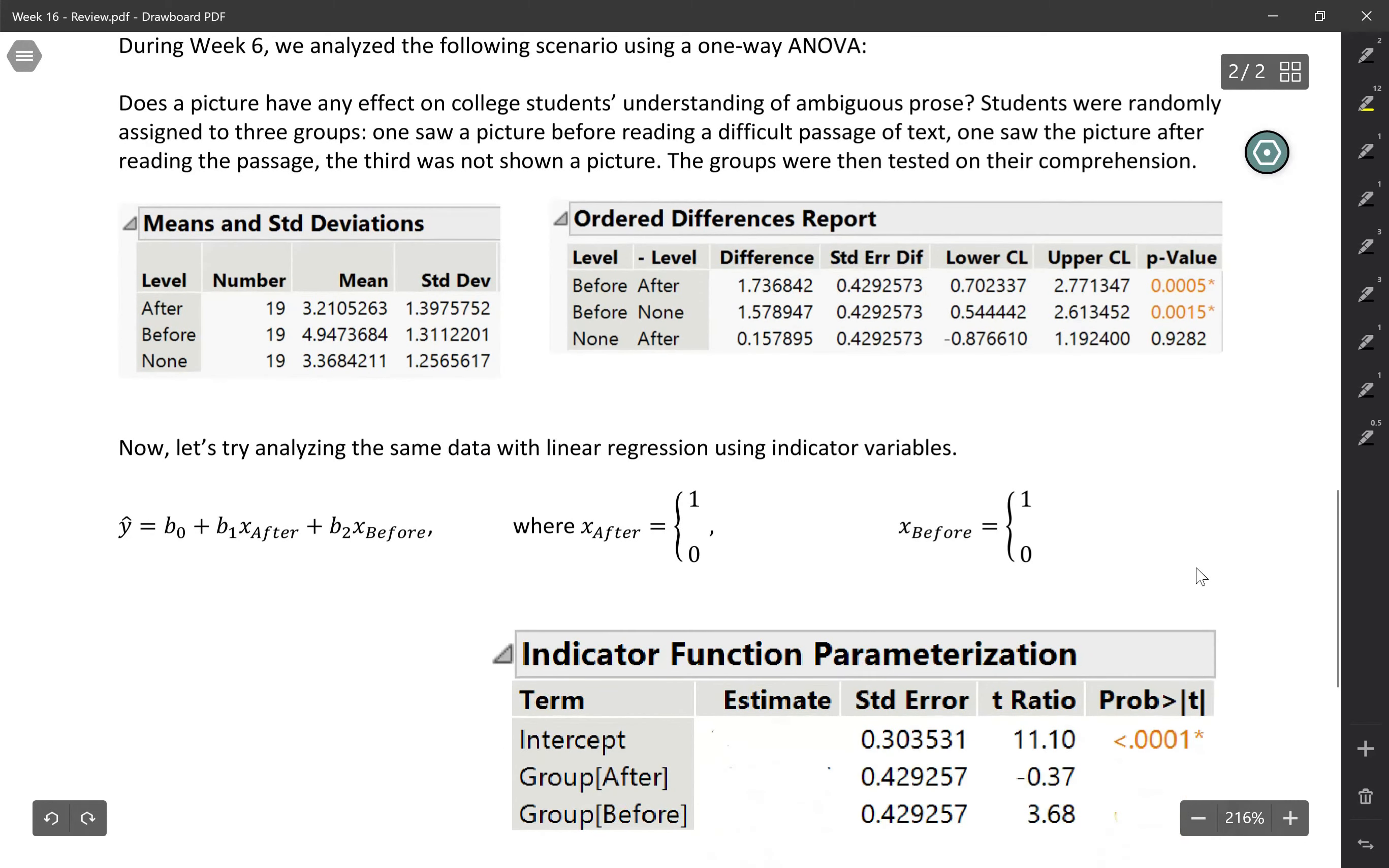So let's say that we wanted to analyze the same data, but with linear regression this time. So we're going to need to use indicator variables. So I've defined two indicator variables here, one for after and one for before. So x_after is 1 if we're talking about the picture after group and 0 for everyone else. x_before is 1 for the before group, 0 for everyone else.